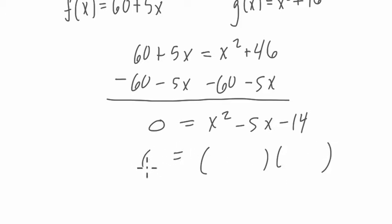I'm trying to look for two numbers that multiply negative 14 but add to negative 5. So that's when we have negative 7 and positive 2.